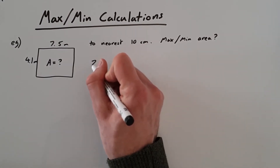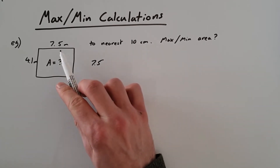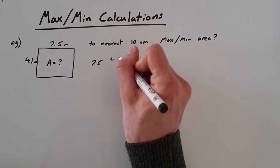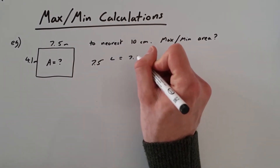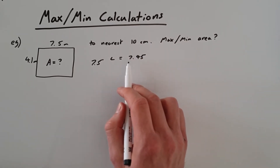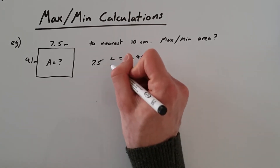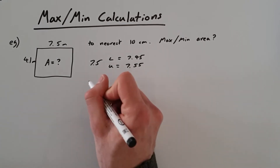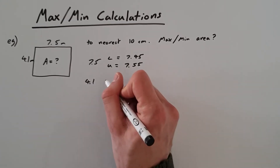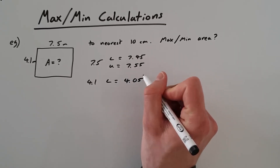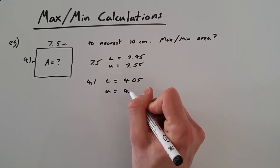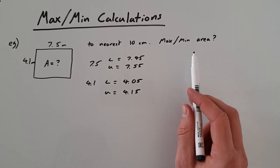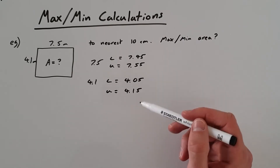For 7.5 to the nearest 10 centimeters — that's the nearest 0.1 meters — we want half of 0.1, which is 0.05, and add or minus that to 7.5. So the lower bound is 7.45 and the upper bound is 7.55. Now doing the same thing for 4.1: the lower bound is 4.05 and the upper bound is 4.15.